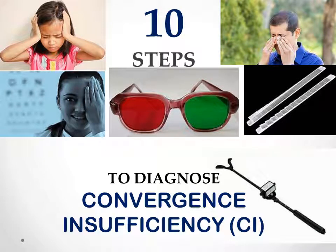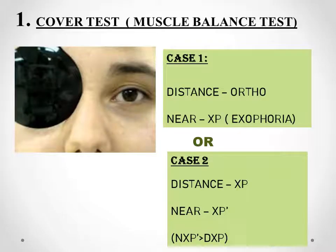Hello viewers, today I am going to discuss about what are the 10 steps to diagnose convergence insufficiency. When an object comes close to us, our eyes tend to converge in order to get a single visual perception of that particular object. In convergence insufficiency, it is one of the binocular vision anomalies wherein the patient is not able to converge as much as required.